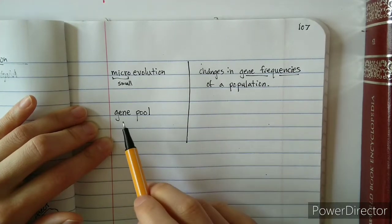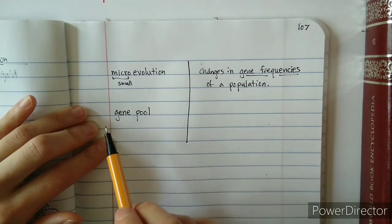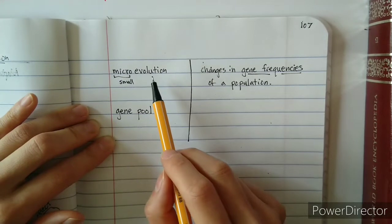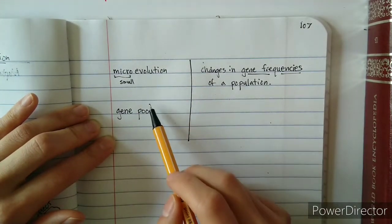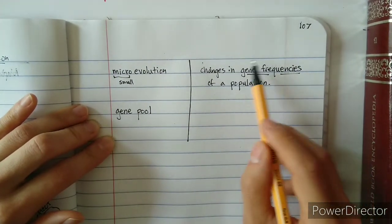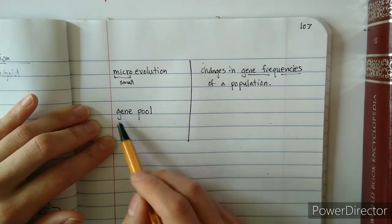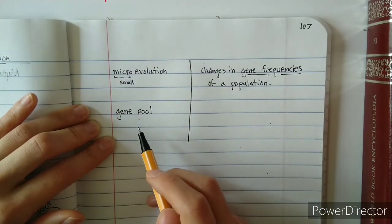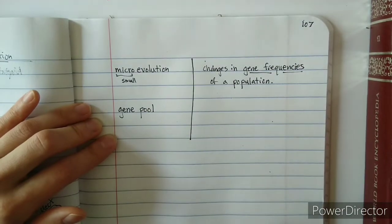I want to emphasize that gene pool and microevolution are completely intertwined, because whenever the gene frequencies change, that is going to be reflected in your gene pool. Keep an eye out for this as I keep explaining.